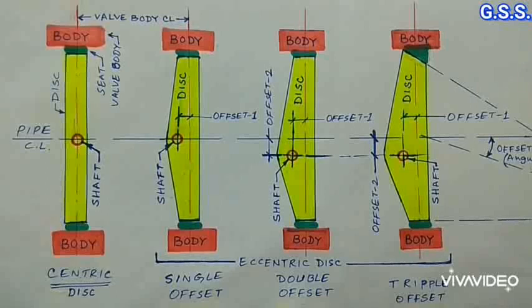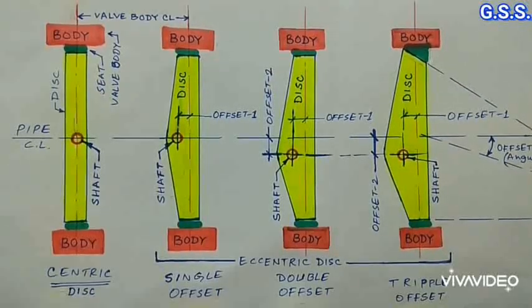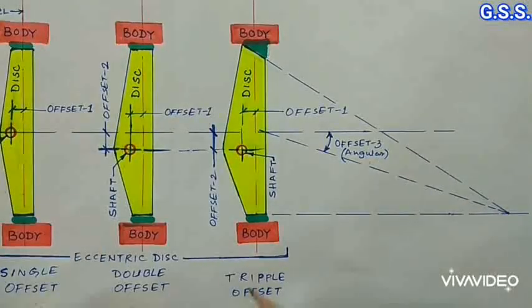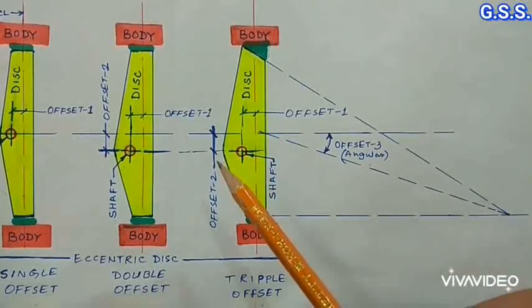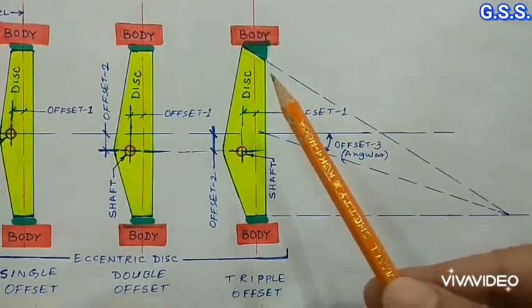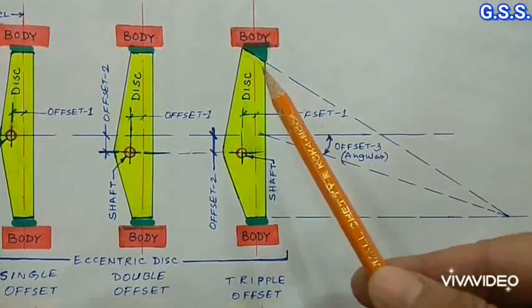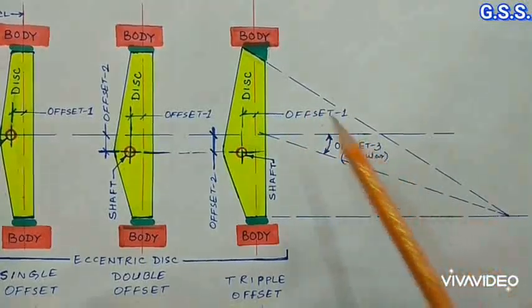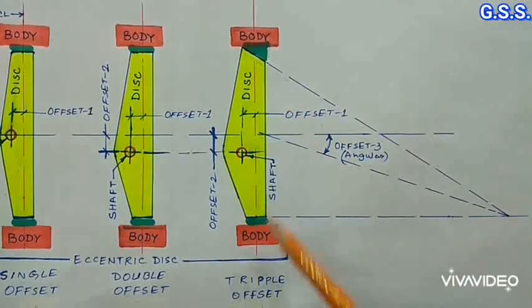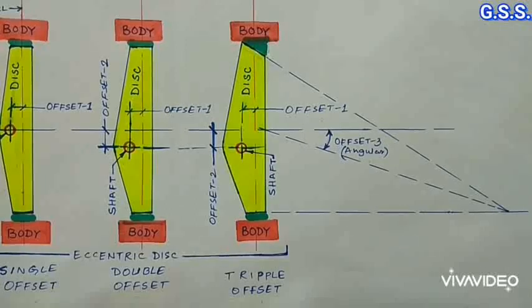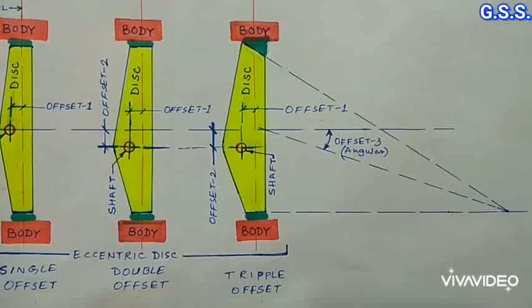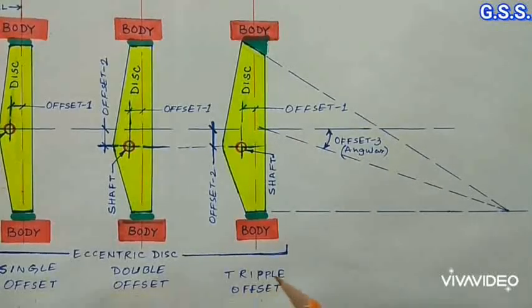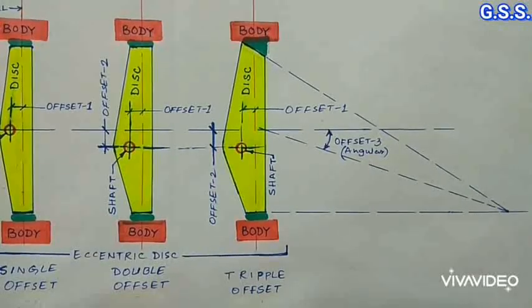In double offset arrangement, there will be less friction on seat and valve's life will be more. In triple offset butterfly valve, three offsets are there. Two offsets are same as double offset butterfly valve. But additionally, third offset is conical shape disc, which matches with conical shape metal seat. In this arrangement, there will not be any friction or rubbing on the seat and makes the valve bubble type shutoff in high pressure and in high temperature application. Also, valve will have longer life. Double offset and triple offset butterfly valves are called high performance butterfly valves.